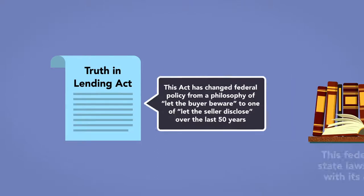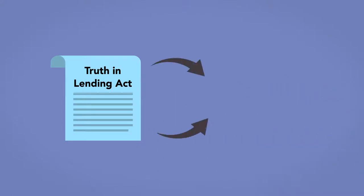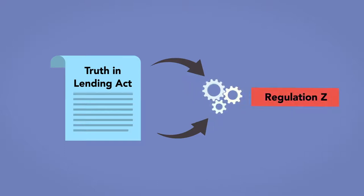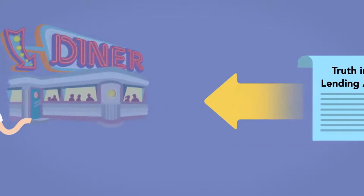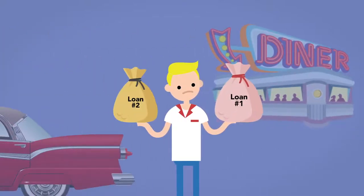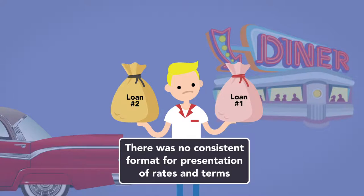This federal act preempts any state laws that are inconsistent with its disclosure provisions. The mandates in the Truth in Lending Act are implemented by regulations commonly known as Regulation Z. Prior to the enactment of the Truth in Lending Act and Regulation Z, it was difficult for consumers to compare loans because there was no consistent format for presentation of rates and terms.